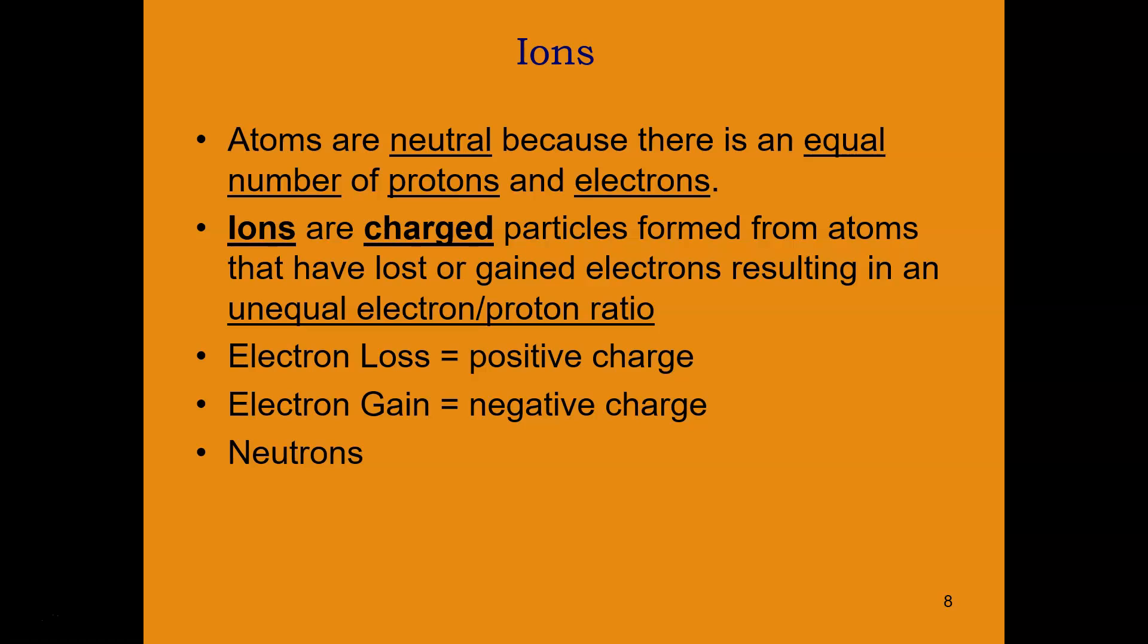You can often determine the charge an ion normally has by the element's position on the periodic table. The alkaline metals, which are 2A elements, lose two electrons to form a 2-positive cation. Aluminum, a member of the 3A family, loses three electrons to form a 3-positive cation.